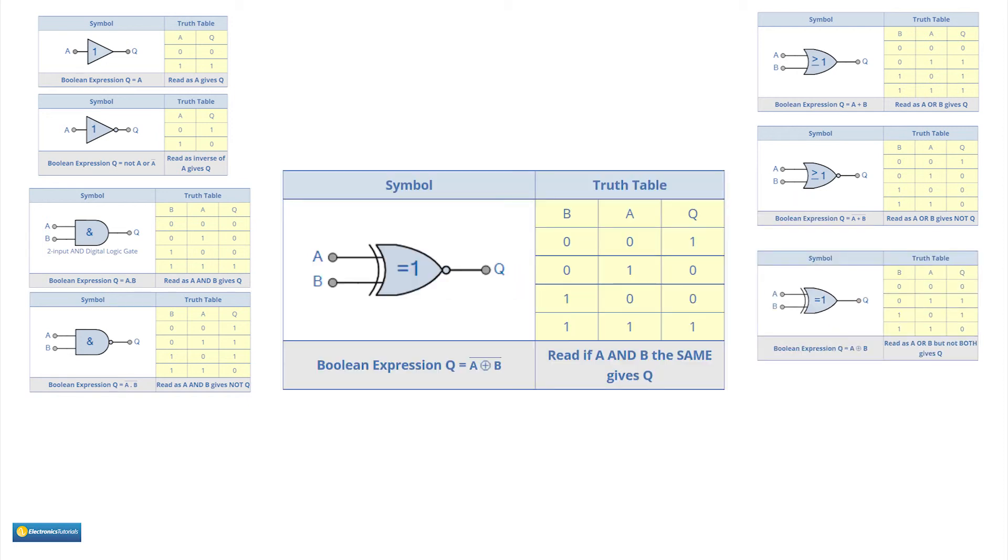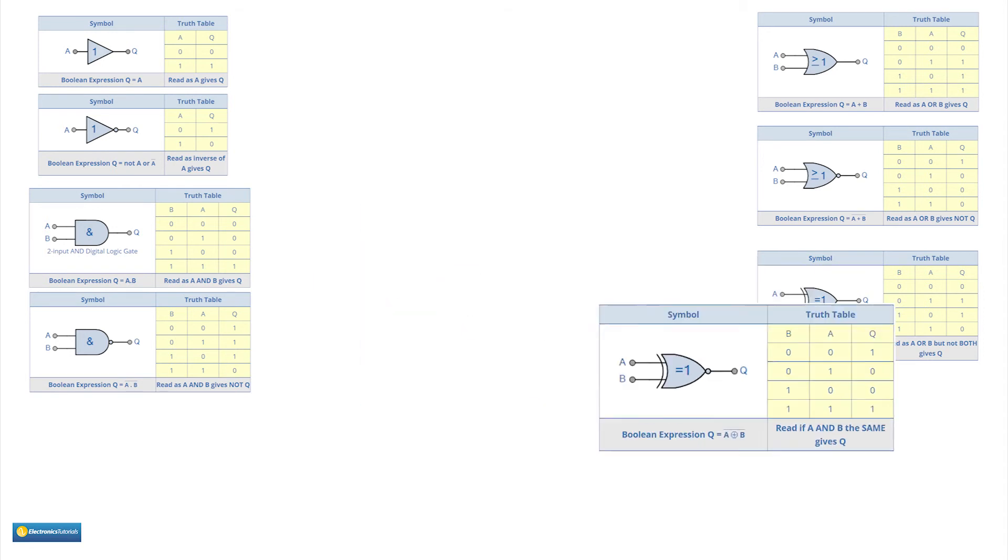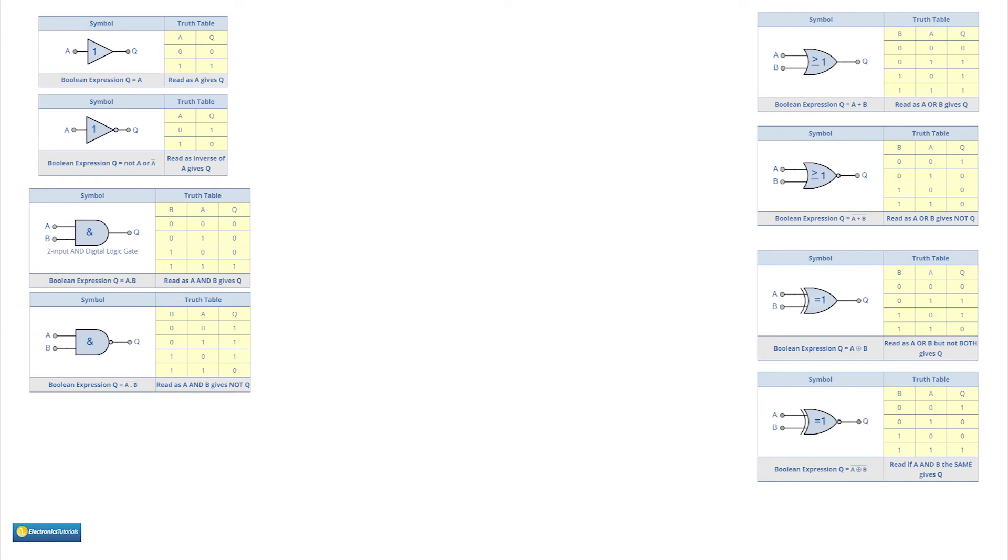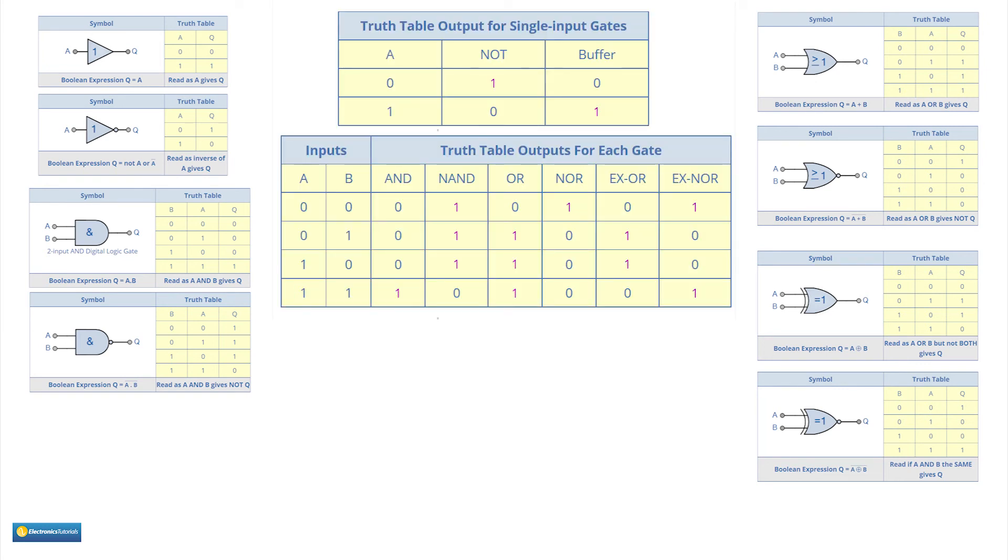Adding an inverter to the exclusive OR gives exclusive NOR and the truth table is shown here. This completes all the possible combinations of logic applied to one and two input gates.